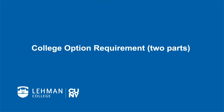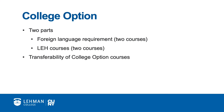The second part of the Pathways structure is the college option. This requirement exists only at CUNY institutions that grant bachelor's degrees, so you may not have heard of it if you're transferring from a CUNY community college. The requirement varies from six to twelve credits, depending on the number of credits transferred and whether the student has completed an associate's degree. These requirements are called college option because each of CUNY's bachelor degree-granting campuses has the option to decide what type of course to include in the college option.